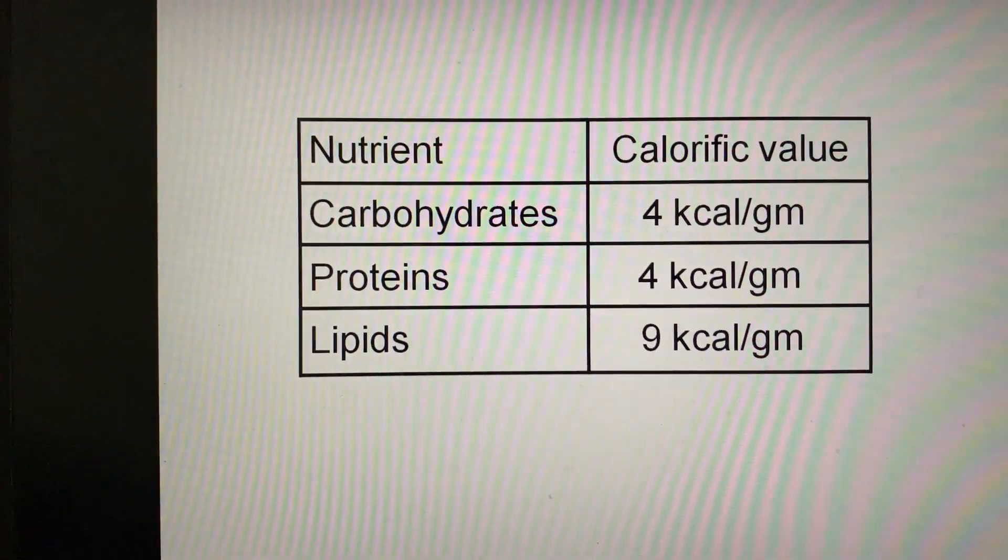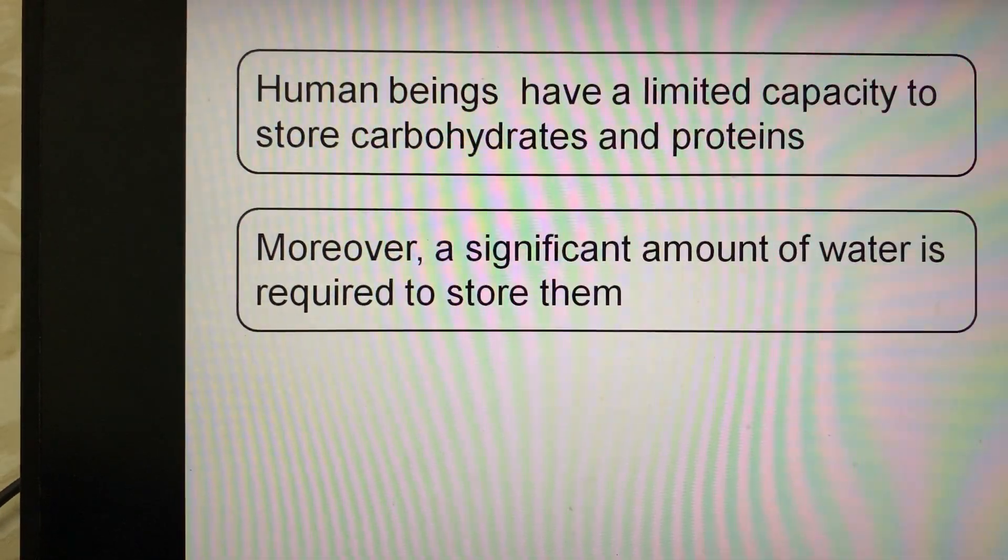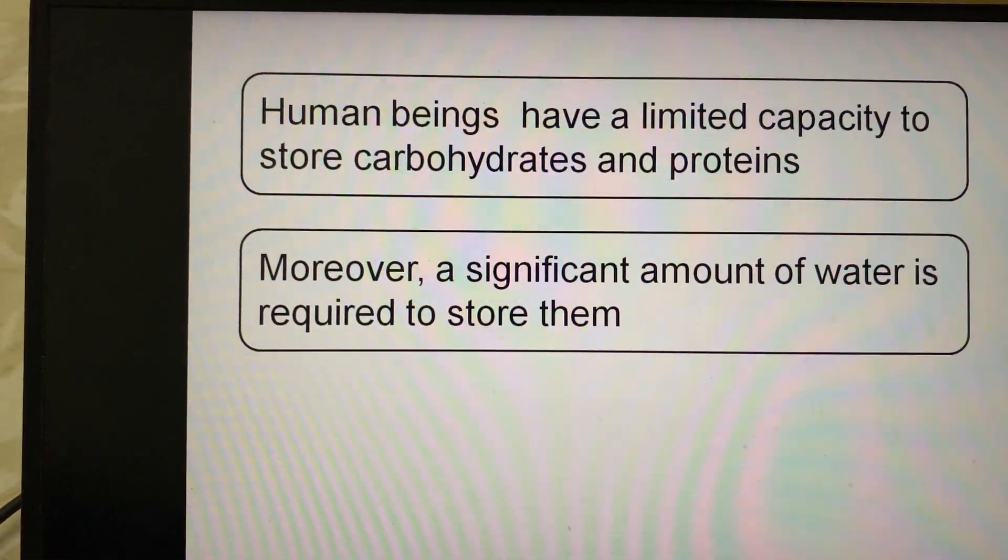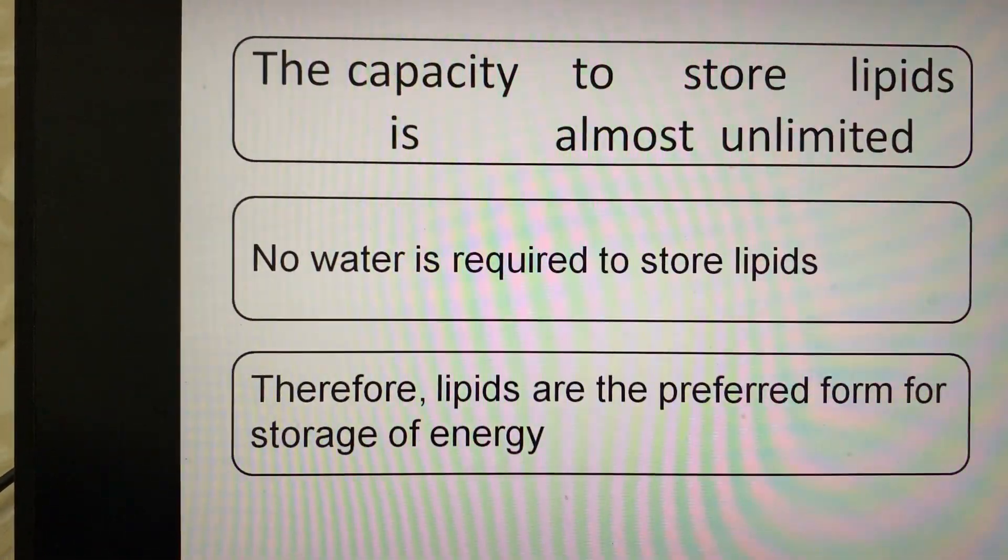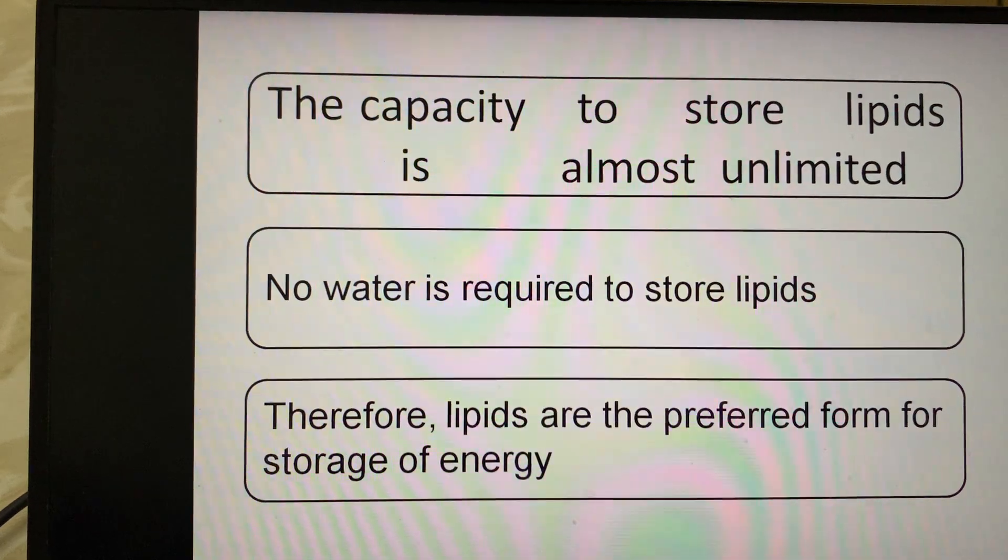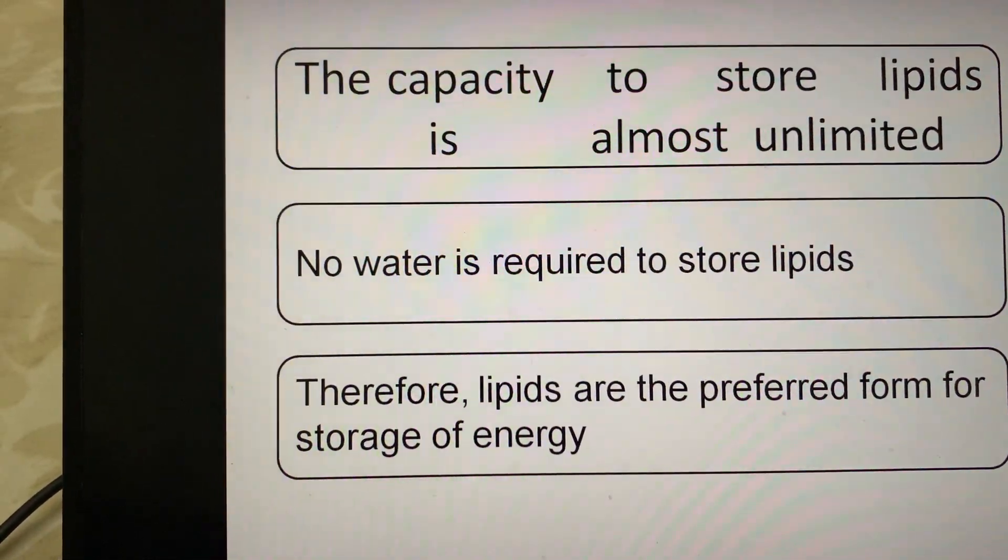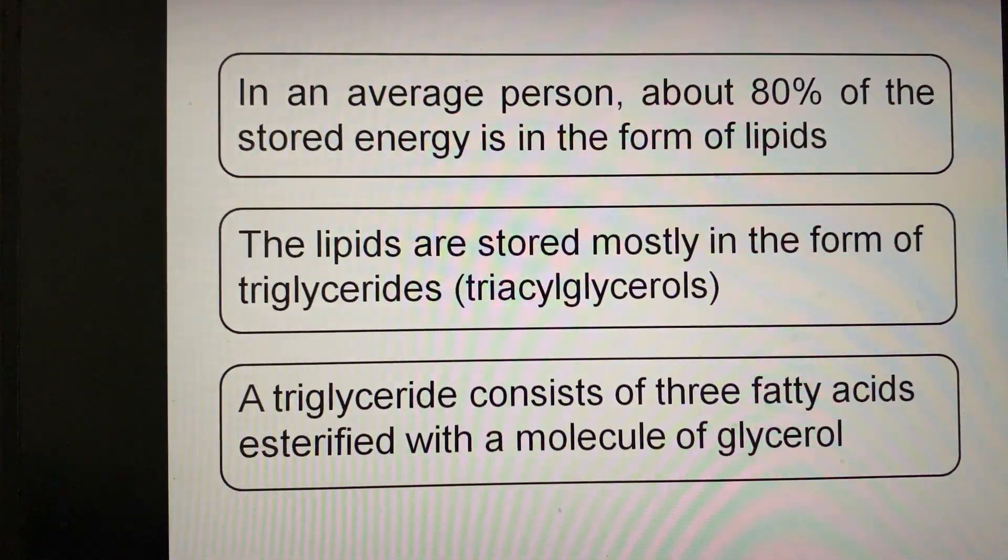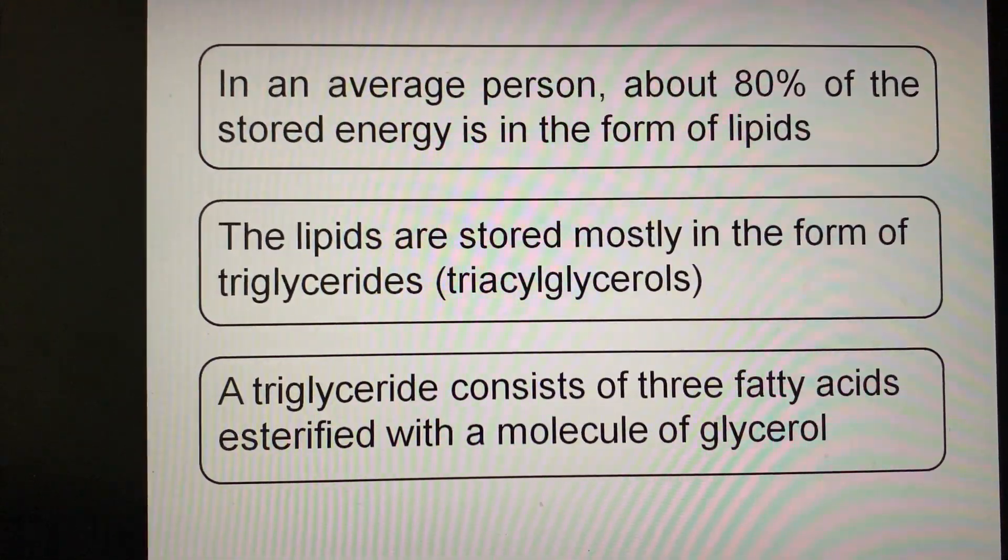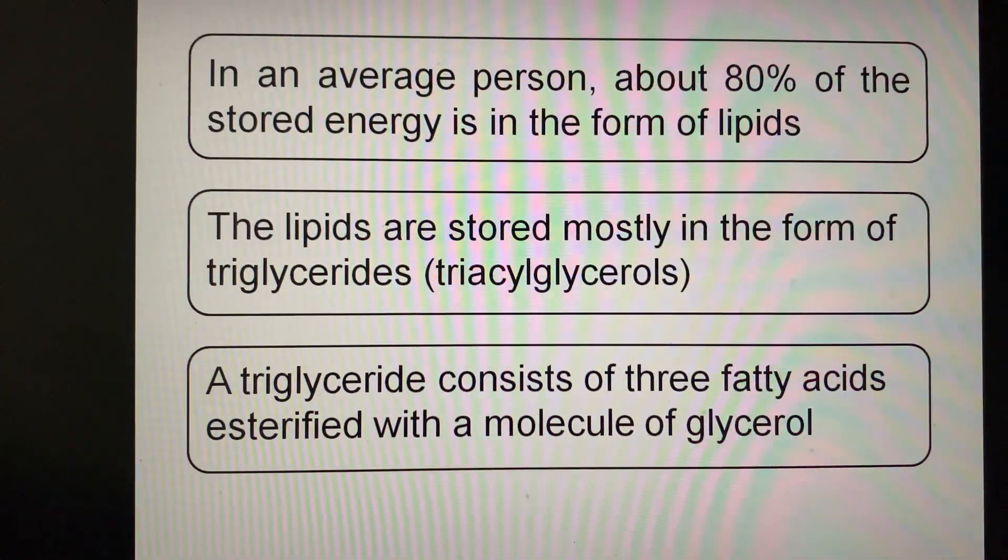Human beings have limited capacity to store carbohydrates and proteins, and significant amounts of water are required to store them. But the capacity to store lipids is almost unlimited, and no water is required. Therefore, lipids are the preferred form for energy storage. In an average person, about 80% of stored energy is in the form of lipids. Lipids are stored mostly as triglycerides. A triglyceride consists of three fatty acids esterified with a molecule of glycerol.